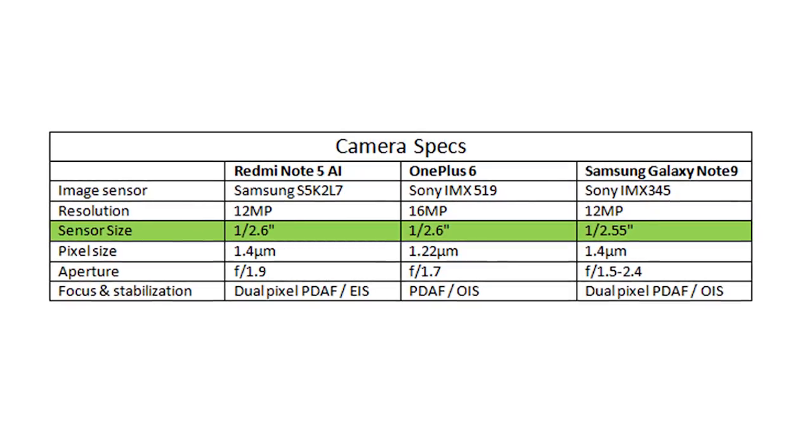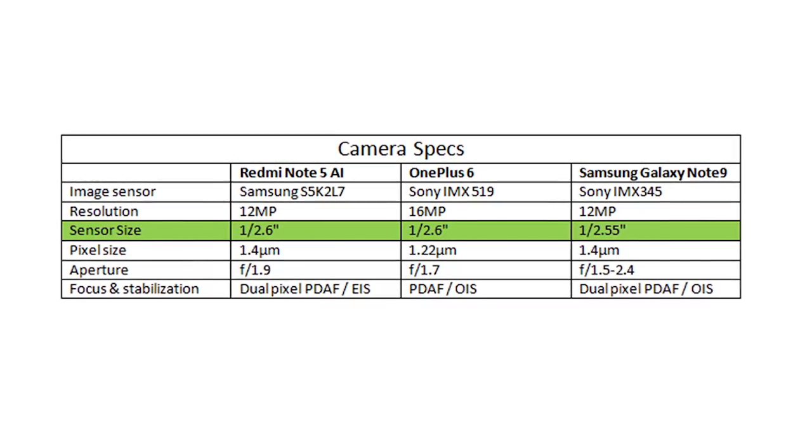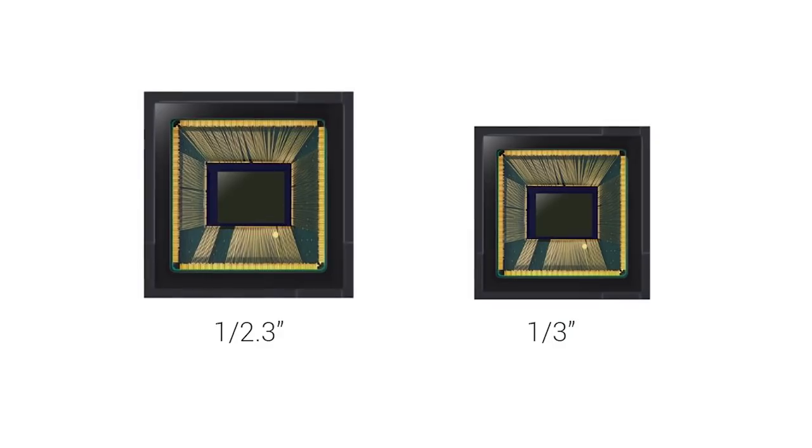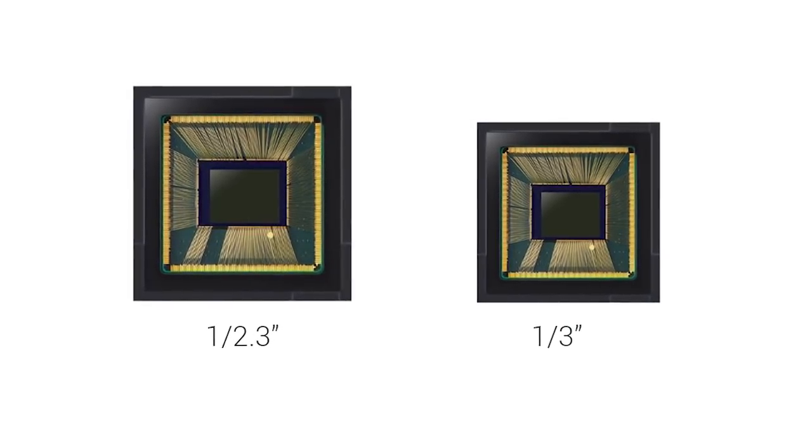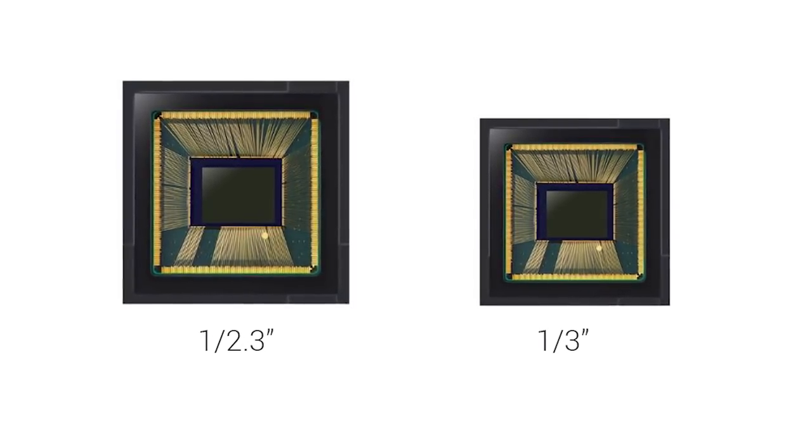OmniVision sensors are used in budget-friendly devices. Sony and Samsung are used in mid-range and high-end phones. So the recommendation is to go with either Sony or Samsung image sensor. Now, for image sensor size, values like 1/2.3, 1/2.4, 1/2.8, and 1/3 inch represent the size of the image sensor. The lower the denominator value, the larger the sensor. So 1/2.3 inch is larger than 1/3 inch. A bigger image sensor size performs better in low light and produces better quality photos.